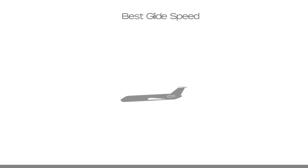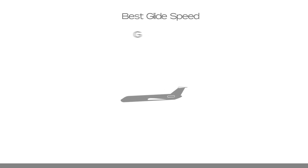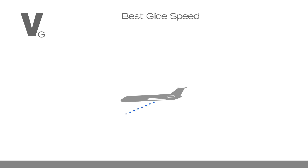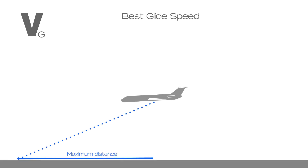Best glide speed is represented by VG. This is the speed at which the aeroplane will glide the maximum distance from a given altitude. This speed decreases as weight decreases.